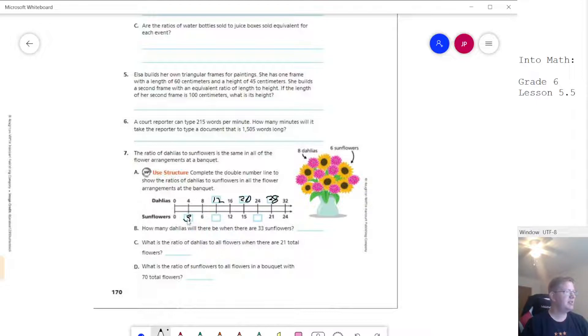This looks like we're counting by three. So we can do three, six, nine, 12, 15, 18, and 21, 24.